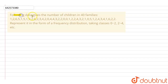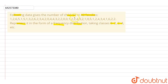In this question, we are given that the following data gives the number of children in 40 families. We have to represent it in the form of a frequency distribution, taking classes as 0 to 2 and 2 to 4.